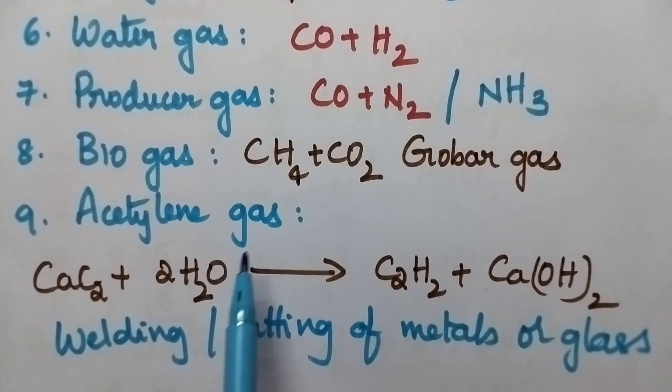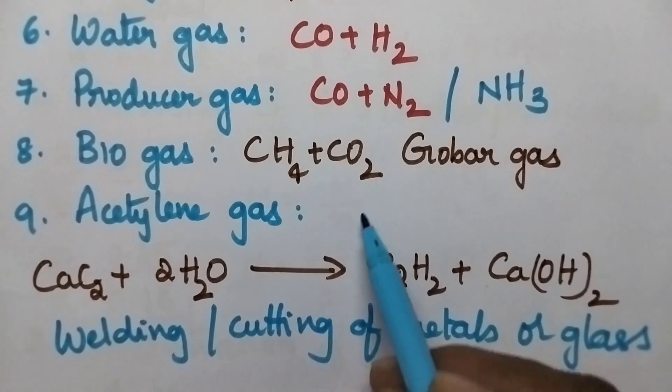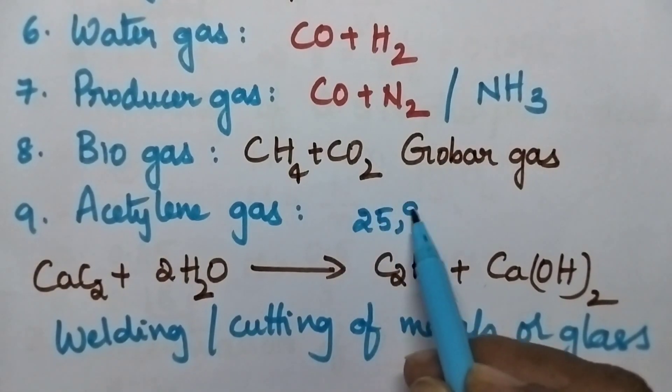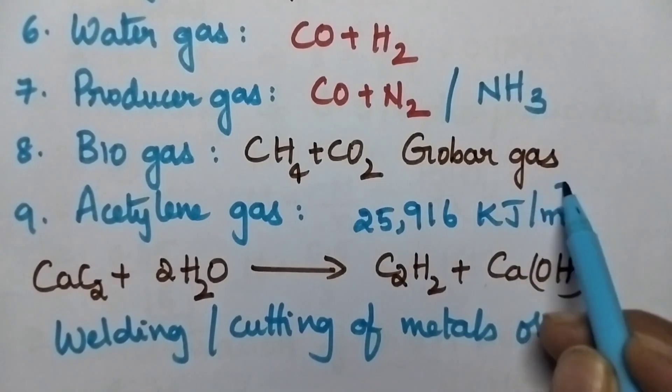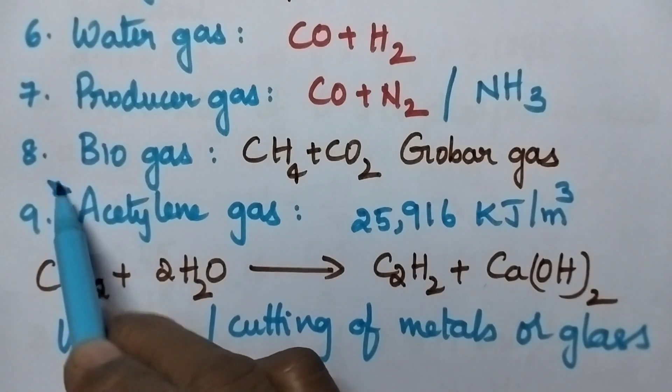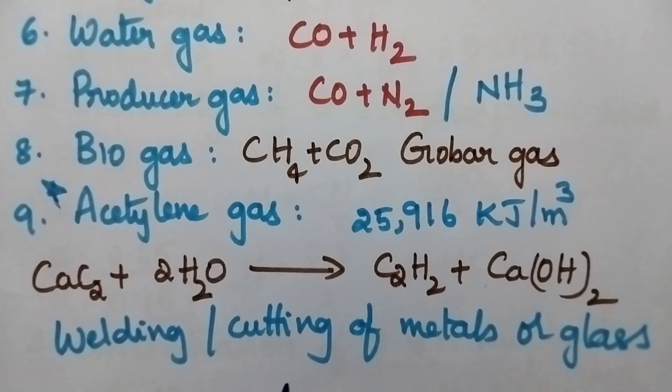Acetylene gas can be prepared by treating calcium carbide with water. Then it results in the formation of acetylene gas and it is having the highest calorific value, of the order 25,916 kilojoules per meter cube. Hence it can be used for the welding and cutting of metals or glass.